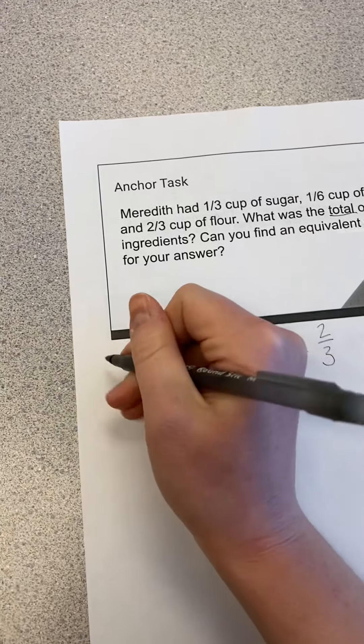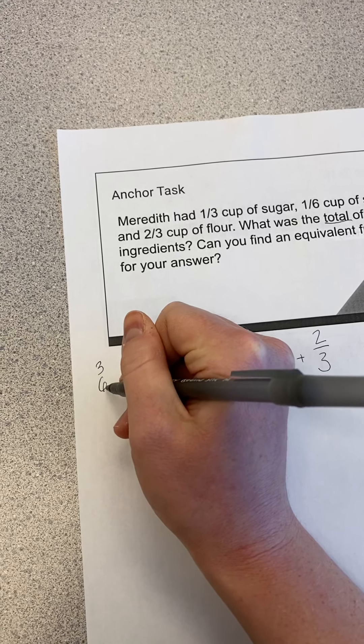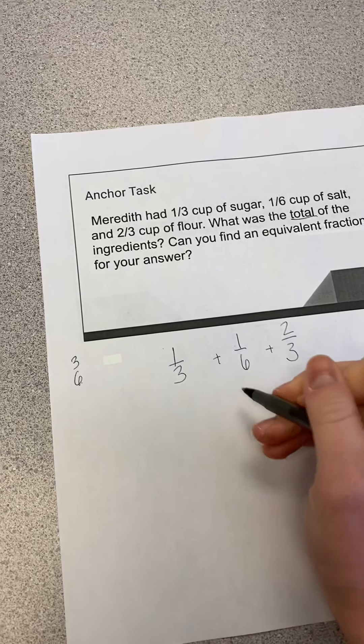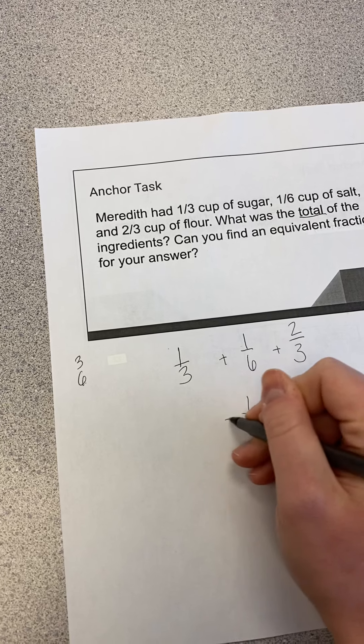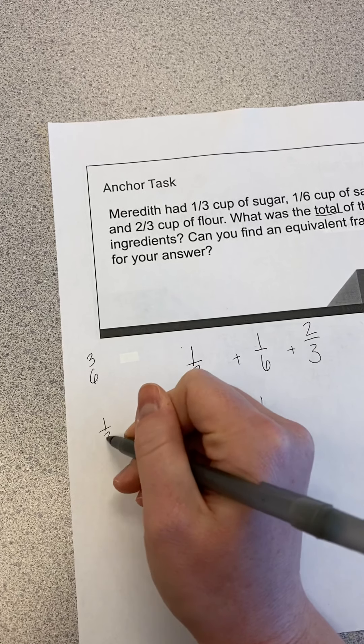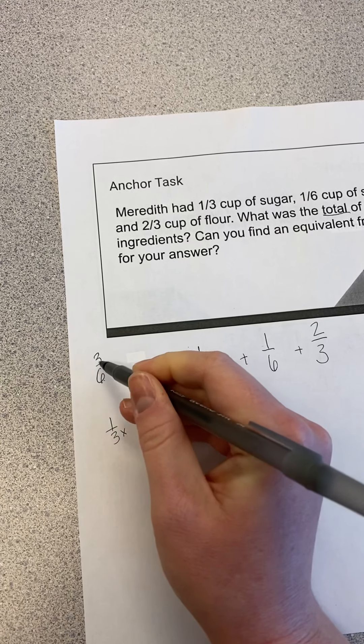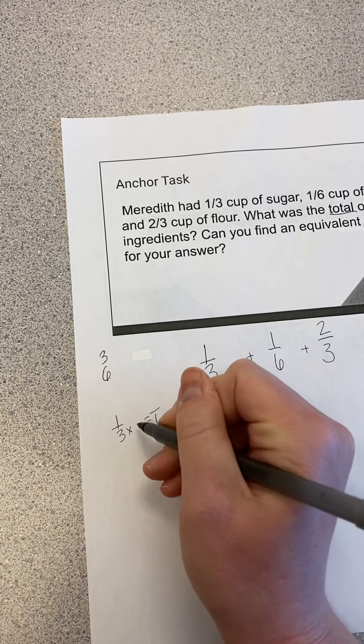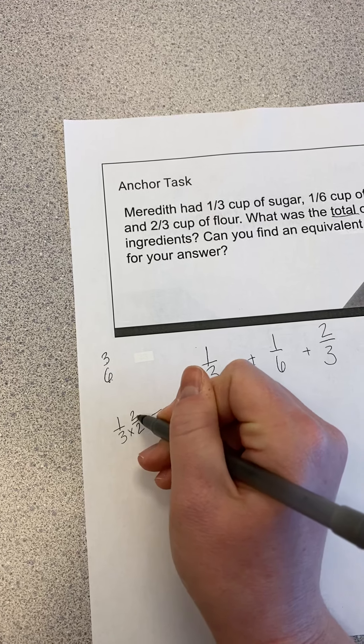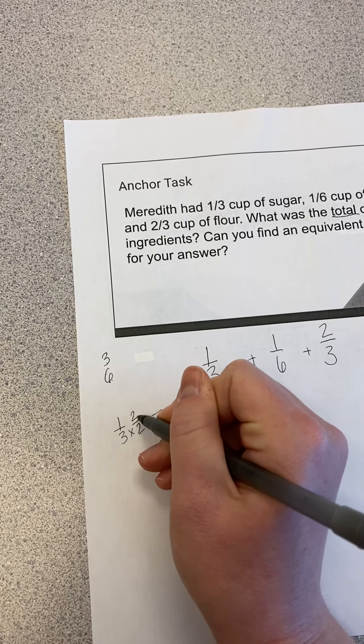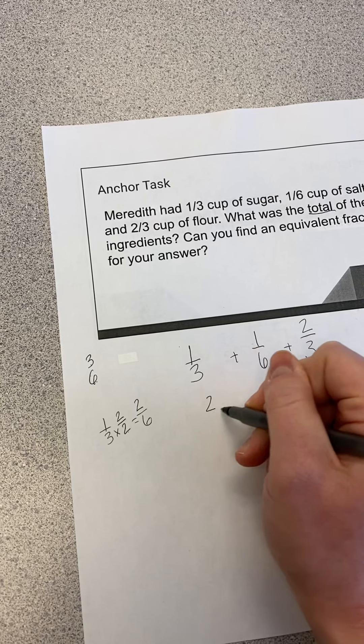I know that three has a multiple that is six, so I'm going to leave one-sixth the same. In order to go from one-third to sixth, I have to multiply by two since three times two is six. So I'm going to multiply with my power of one, two halves. So one-third is the same as two-sixths.